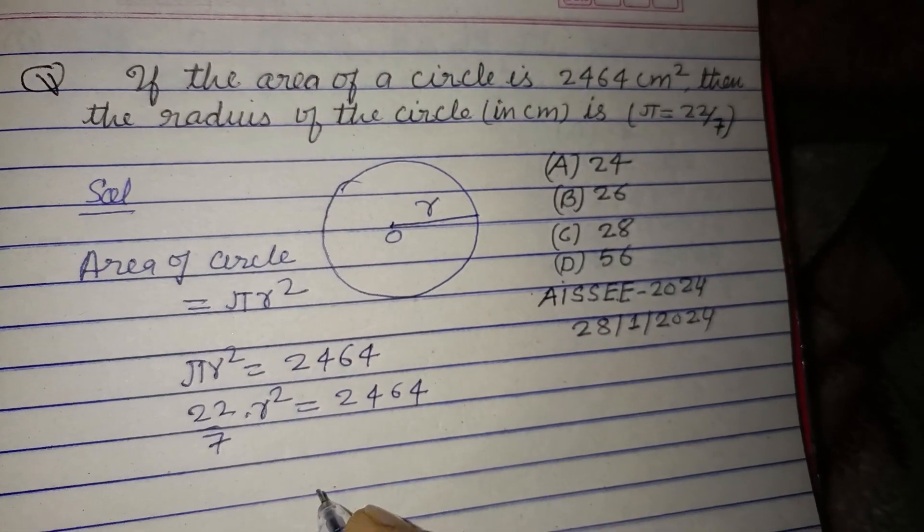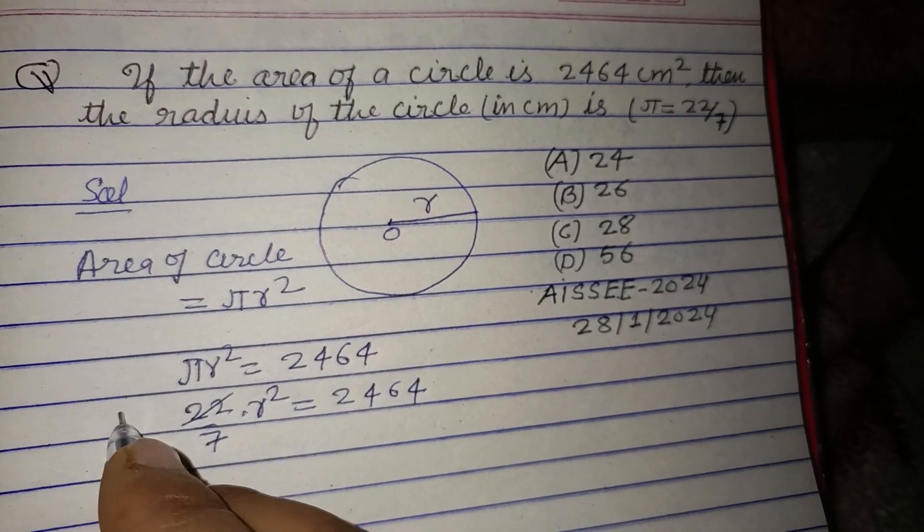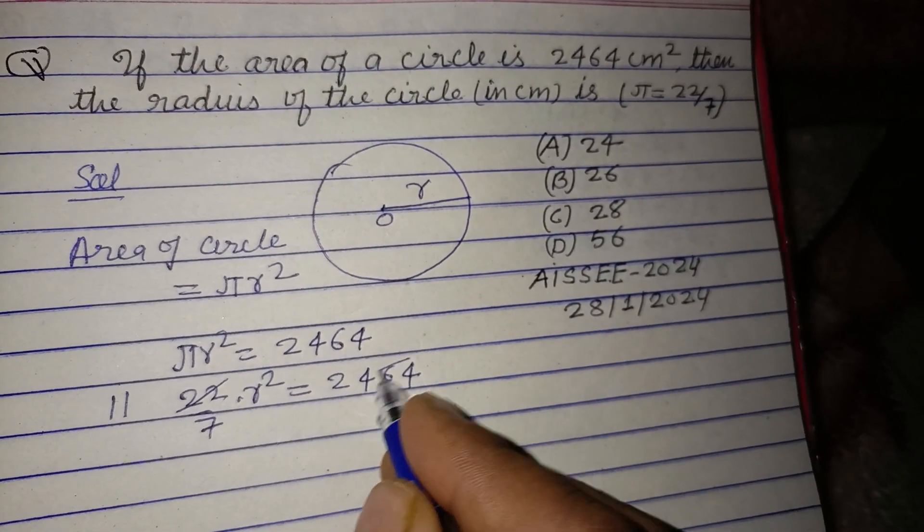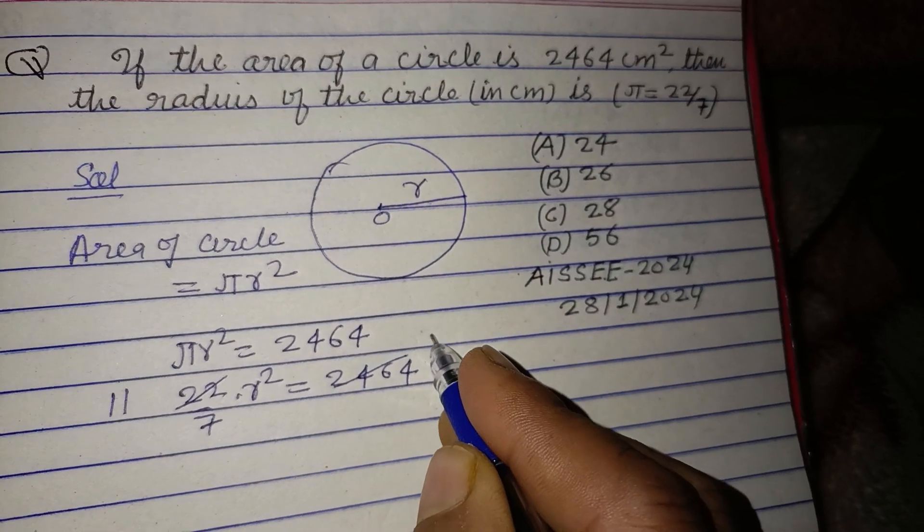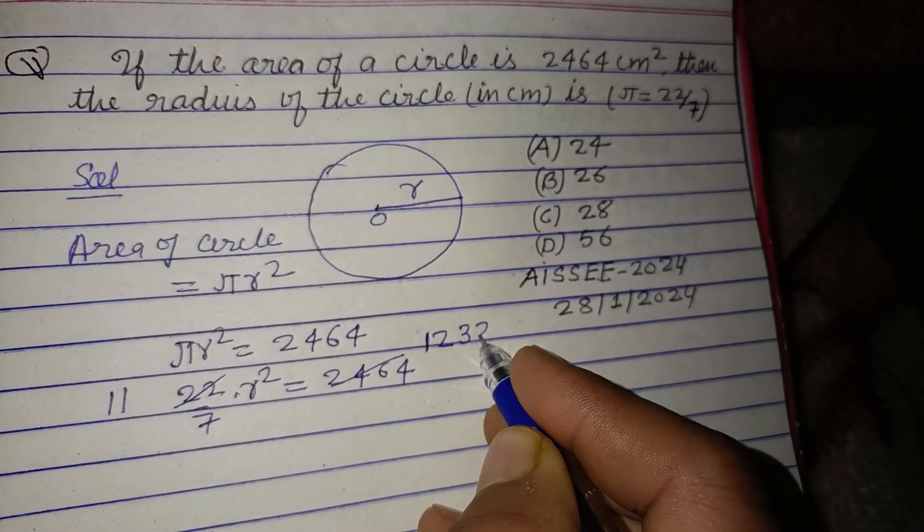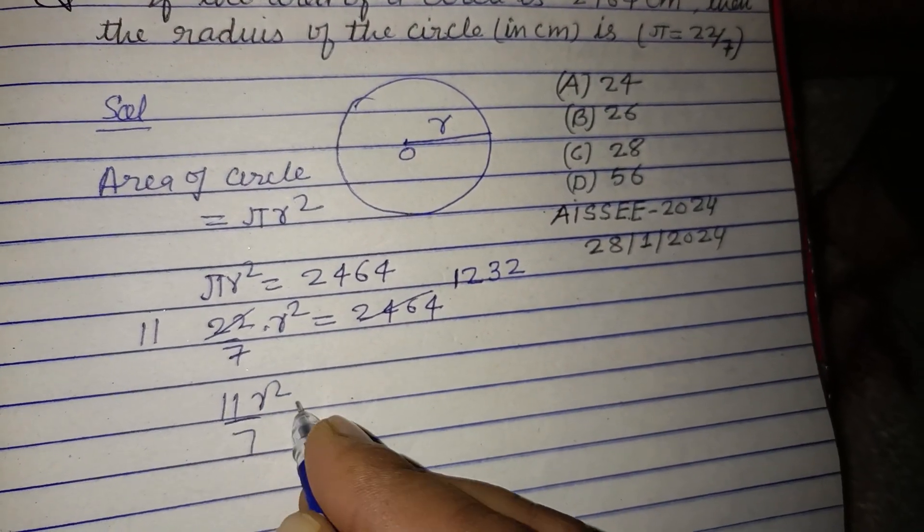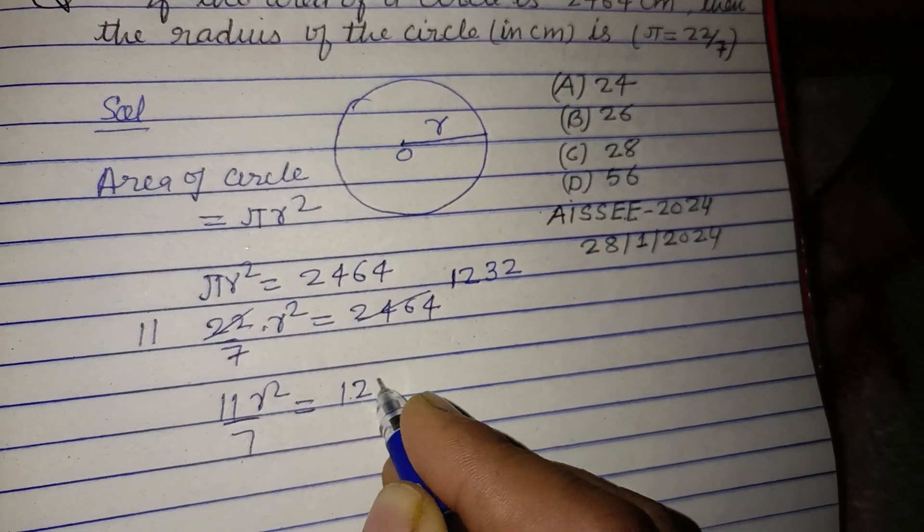Now dividing this by 2: 11 times 2 is 22, and this way 2 into 1232 is 2464. So 11r² upon 7 equals 1232.